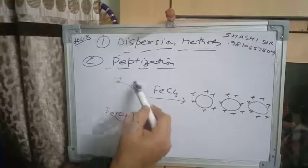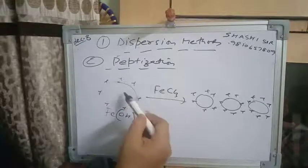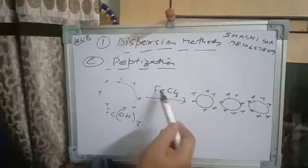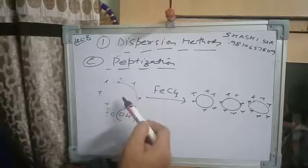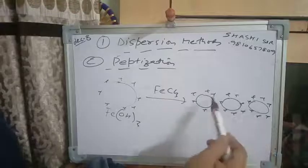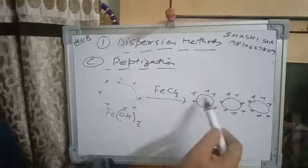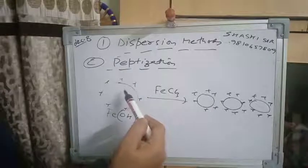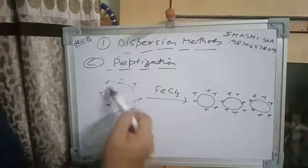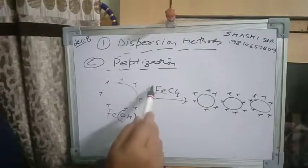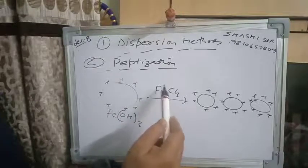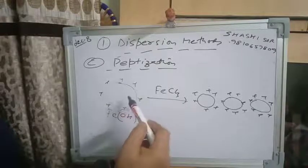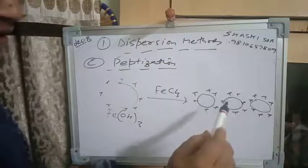The cause of peptization: as soon as the electrolyte FeCl₃ is added to the freshly prepared precipitate Fe(OH)₃, the particles of the precipitate adsorb Fe³⁺ ions from FeCl₃. These adsorbed ions give a positive charge to the precipitate surface. Due to electrostatic repulsion between similarly charged particles, the precipitate disperses into colloidal particles. This is how peptization works — the reddish-brown colored Fe(OH)₃ precipitate gets converted into colloidal particles.